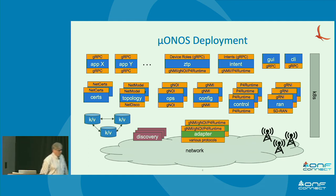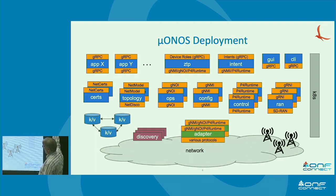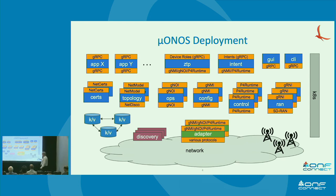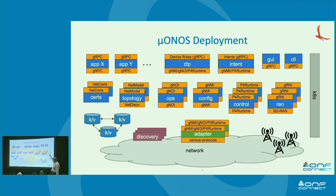Looking at the architecture diagram: on the top are the northbound-ish things you might write yourself. App X and Y are random applications, ZTP is zero-touch provisioning, and intents would be a very high-level abstraction that we really want to pull out of the core. GUIs and CLIs sit there as well. These are all on standard APIs — either gRPC or P4 Runtime. Everything is held together with Kubernetes, which is really important for scale-up, scale-down, container management, and lifecycle management.